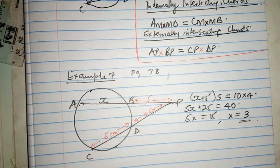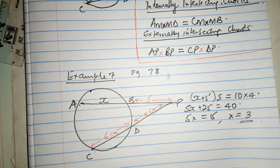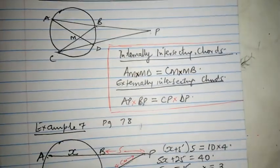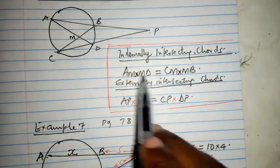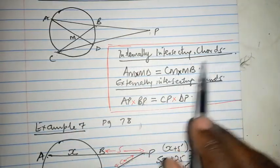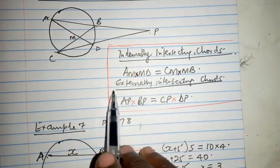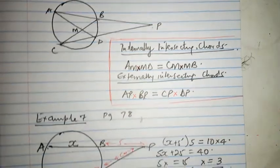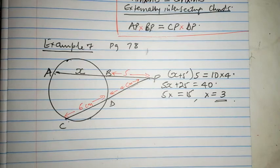I will take another video to explain example 8, and for now let's just stop there. But remember, whether chords intersect internally, that is the formula. Externally intersecting chords, this is the formula. Of course we have understood example seven together.